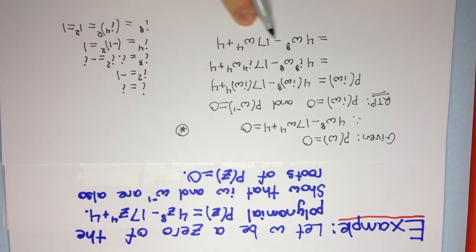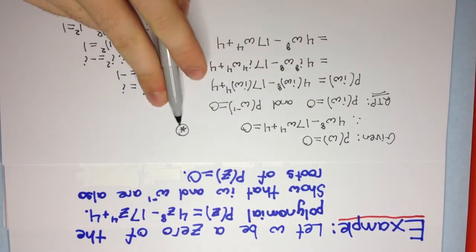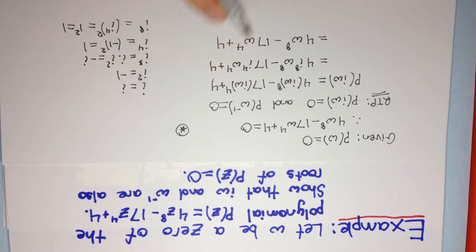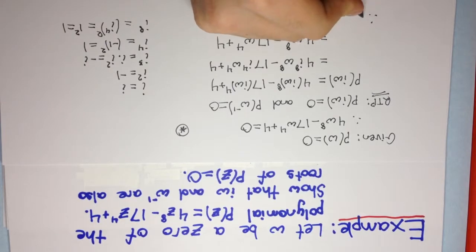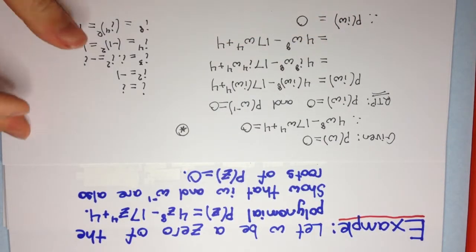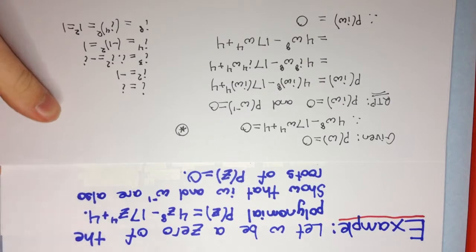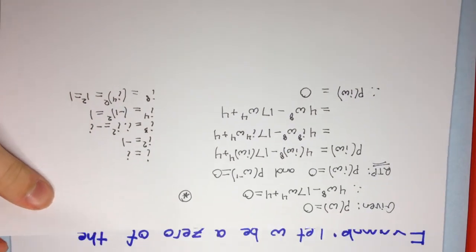You'll see that this is just the value from the starred equation, which equals 0. And so, therefore, we've shown that p(iω) = 0, meaning iω is a root.